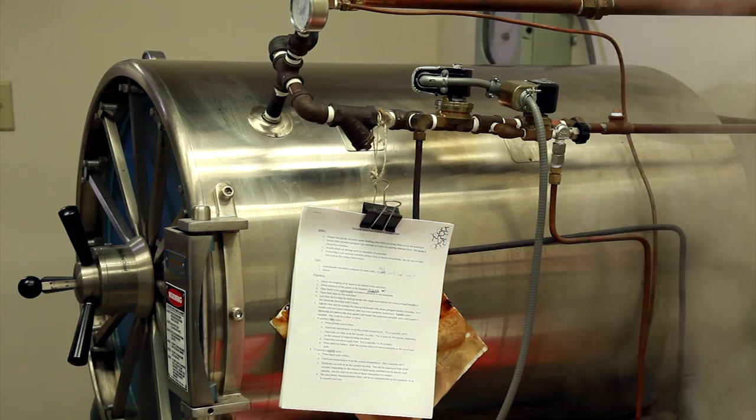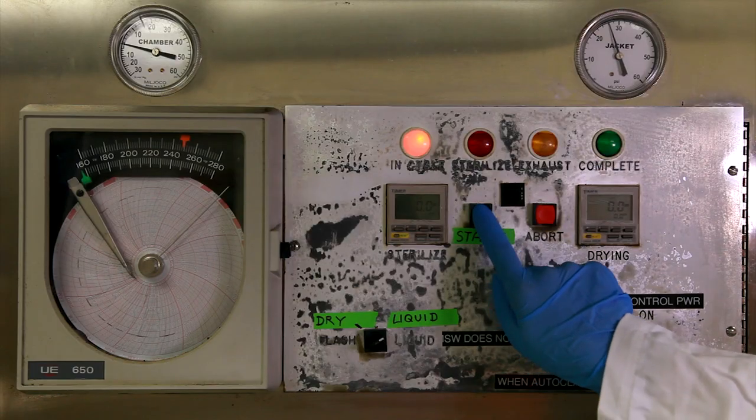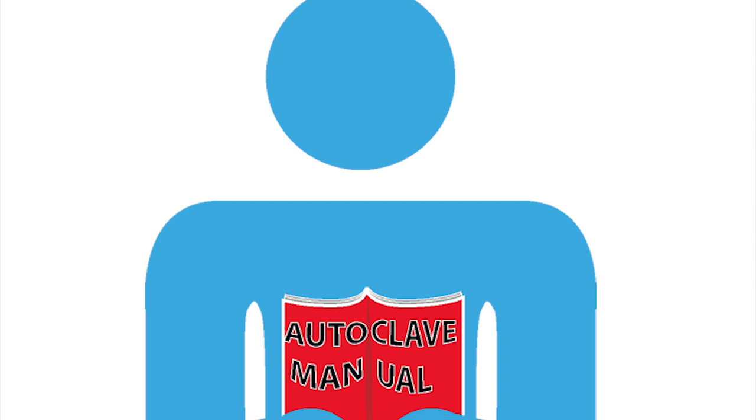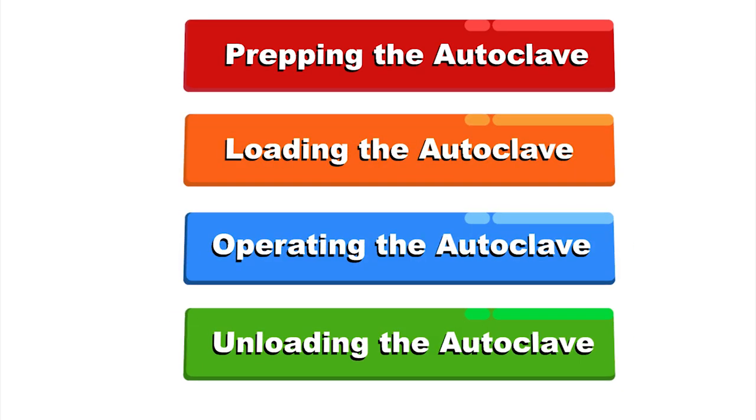While people still use stovetop pressure cookers to decrease cooking times for beans and sterilize mason jars or baby bottles, autoclaves in laboratories are used to decontaminate or sterilize various items using both steam and pressure. The reason we mention the high heat and high pressure is because these are also the hazards that must be considered when working near or operating an autoclave. There are a variety of autoclave styles found on the ASU campus, and while they may look slightly different from each other, they operate on the same principle and have several features in common. However, some autoclaves do have greater hazards than others. Always make sure you are properly trained on how to operate the unit you will be using.